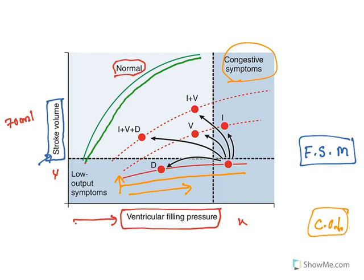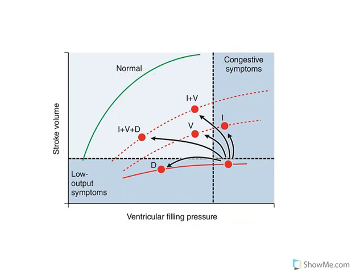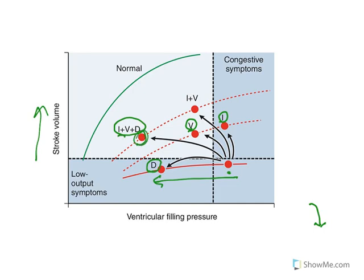How can you treat this? Certain agents are used. The letter D on the graph indicates diuretics — when you use a diuretic, urinary output increases, reducing congestion, and the pressure is reduced. But diuretics will not increase stroke volume. Whereas using inotropic agents or vasodilators will cause an increase in stroke volume. The combination will move the condition to a better point on the curve. Understand the importance of these three agents: diuretics, inodilators, and vasodilators.